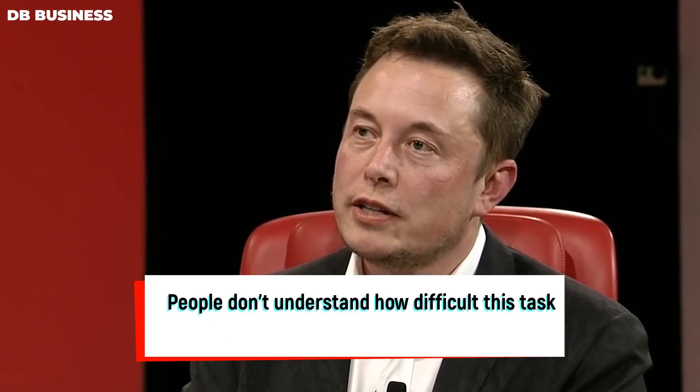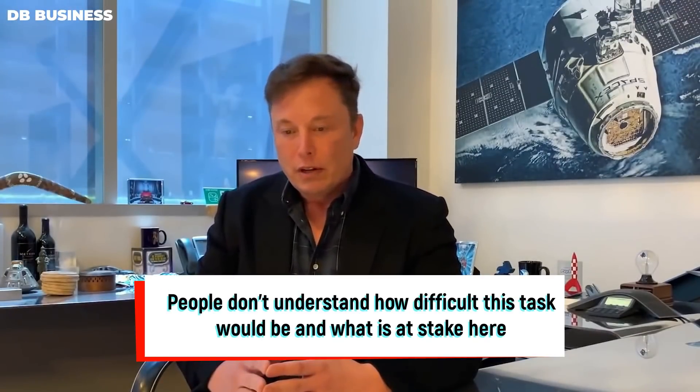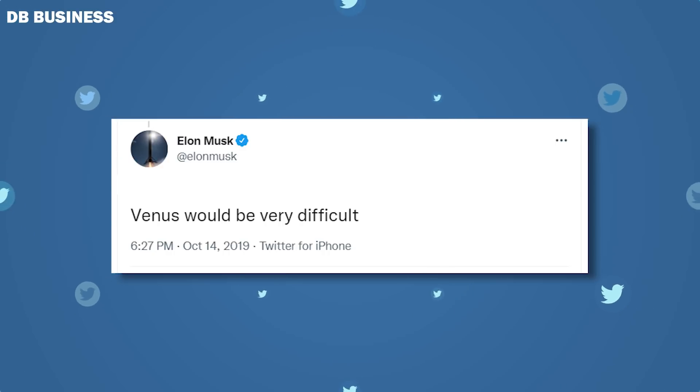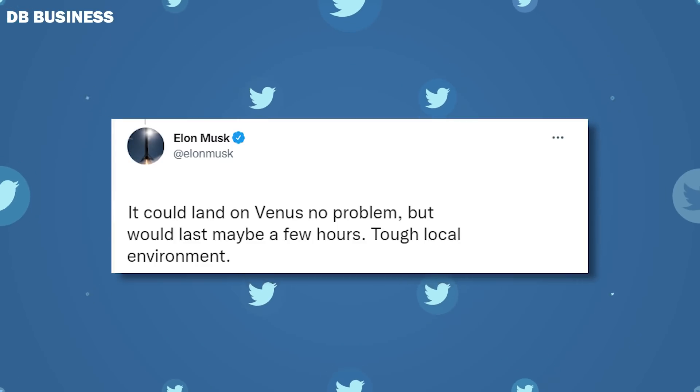Elon Musk was asked about why SpaceX is not attempting to land rockets on Venus. As Elon said, people don't understand how difficult this task would be and what is at stake here. In a series of tweets, Musk has stated that Venus would be difficult and that Venus has a tough local environment.